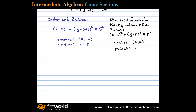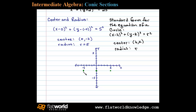Given the center and the radius, we can sketch the graph of the circle. We'll start at the center 0 comma negative 2 and mark off the radius horizontally and vertically. Horizontally, we'll have points on the graph at 5 comma negative 2 and negative 5 comma negative 2. Marking 5 units off vertically, we'll have a y-intercept at 0 comma 3 and another at 0 comma negative 7.